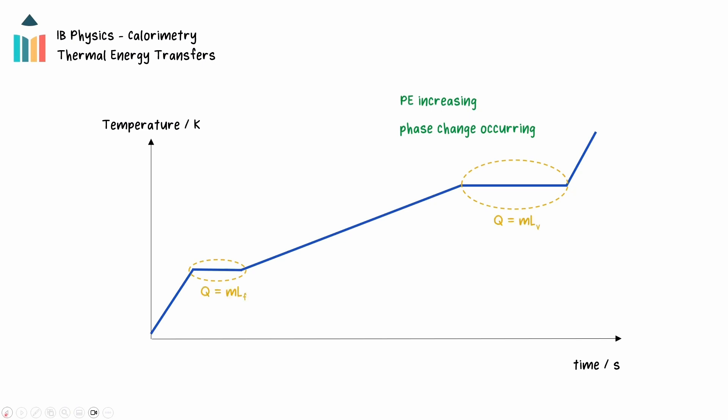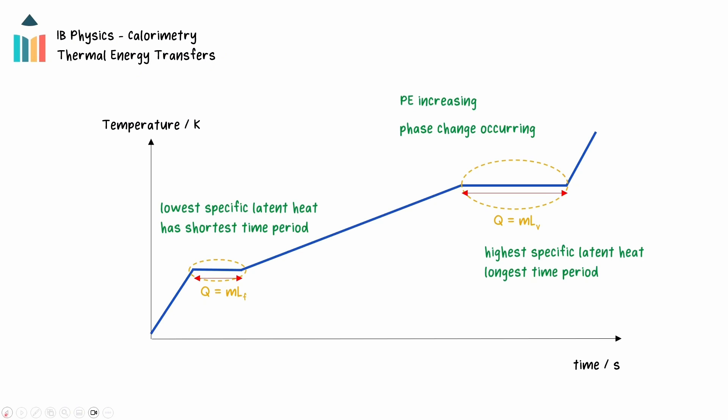The specific latent heat of vaporization is always greater than the specific latent heat of fusion for a substance. Therefore, if the rate of energy transfer remains constant, it will take more time for the liquid to undergo a change of state into a gas than it would for the same mass of the same material to undergo a change of state from a solid into a liquid. This is evident on the graph by the time period shown for the phase changes.